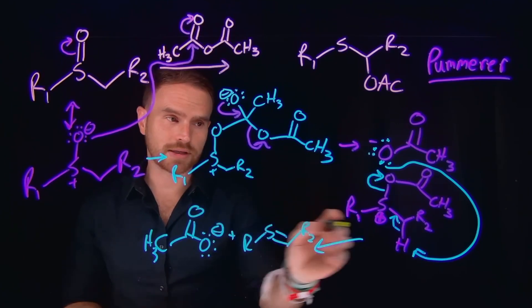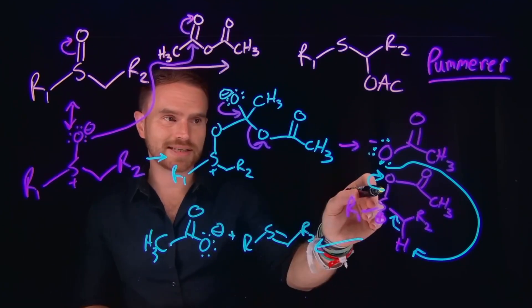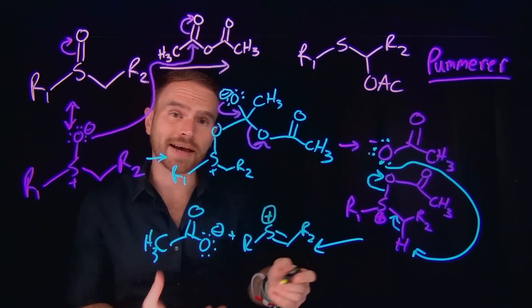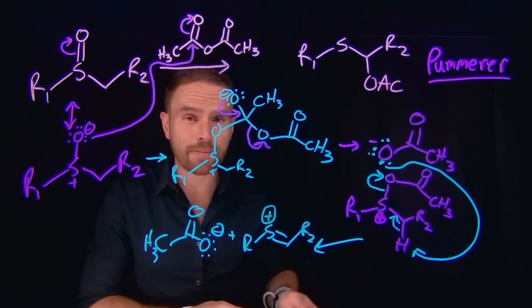And this sulfur, importantly, because even though we formed this carbon to sulfur double bond, since the acetate left as a leaving group is still going to be positively charged, making it electrophilic or at least making the neighboring carbon electrophilic.